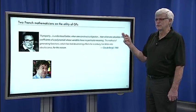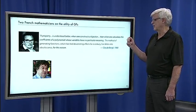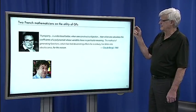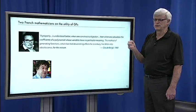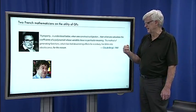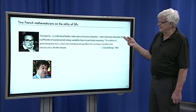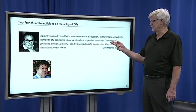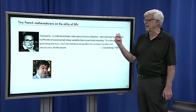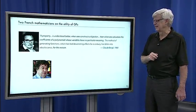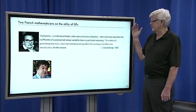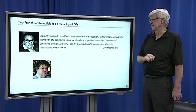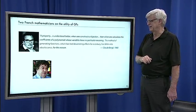A property is understood better when one constructs a bijection than when one calculates the coefficients of a polynomial whose variables have no particular meaning. The method of generating functions which has had devastating effects for a century has fallen into obsolescence for this reason.